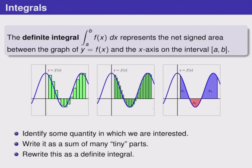In this section we're going to use a similar approach with some slightly different contexts. We're going to identify some quantity in which we're interested such as the area between two curves. We're going to write it as a sum of many tiny parts just like we wrote tiny arbitrarily thin boxes to define the definite integral and we're going to rewrite this as a definite integral.